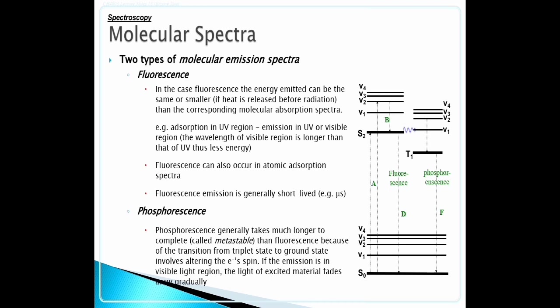Phosphorescence. Phosphorescence generally takes much longer to complete, called metastable, than fluorescence because the transition from triplet state to the ground state involves altering the electron's spin. If the emission is in visible light region, the light of excited material fades away gradually.